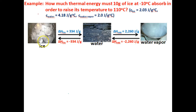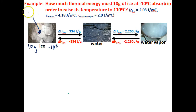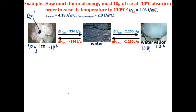In this problem here, it says that we've got 10 grams of ice. This ice is at a starting temperature of negative 10 degrees Celsius. This ice is going to absorb some thermal energy or heat from its surroundings. We want to know how much thermal energy this ice at negative 10 degrees Celsius will need to absorb in order to change its temperature to 110 degrees Celsius. The mass is gonna stay the same, so we will have 10 grams of water vapor at 110 degrees Celsius.